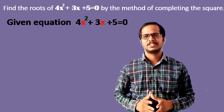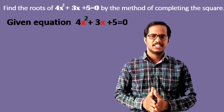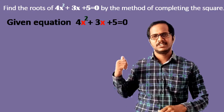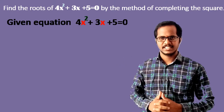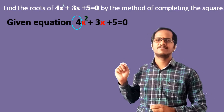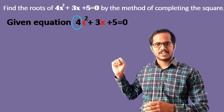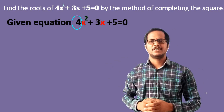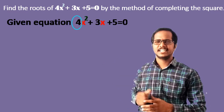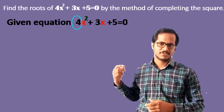In this method, first we have to check whether the x² coefficient is one or not. The x² coefficient here is four, so the coefficient of x² is not equal to one. Hence, we first have to make the x² coefficient equal to one. To do that, we need to divide the entire equation by four so that we get the x² coefficient as one.